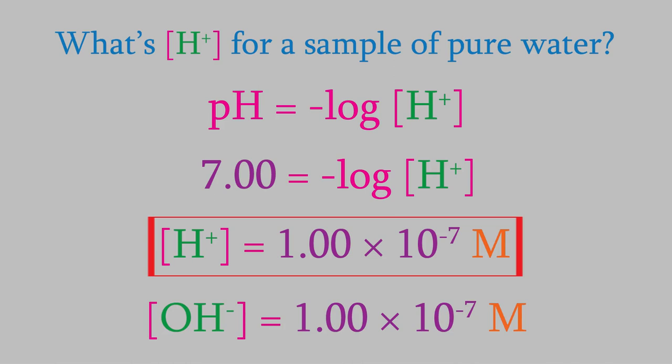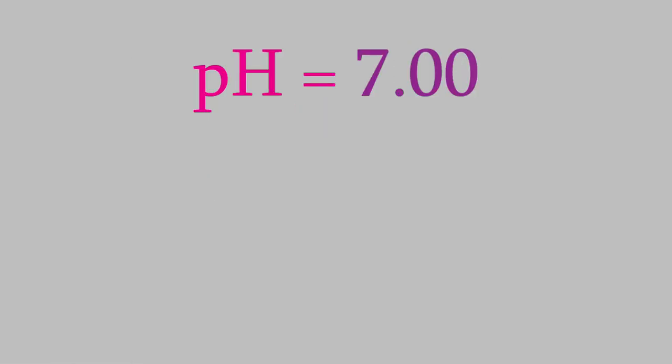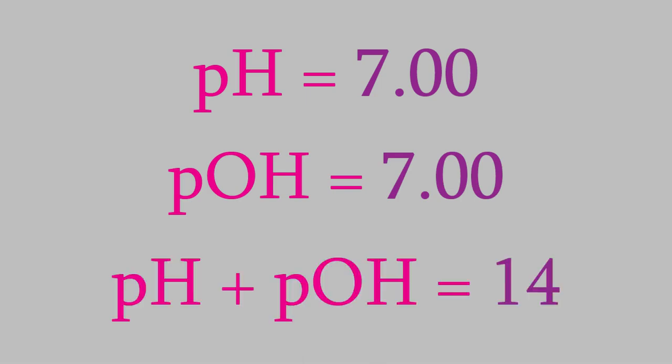And that brings us to another important and very useful fact. Notice that the pH of pure water is 7, and the pOH is also 7, which gives us a total of 14. It turns out that all aqueous solutions, not just plain water, have a pH and pOH that add up to 14.